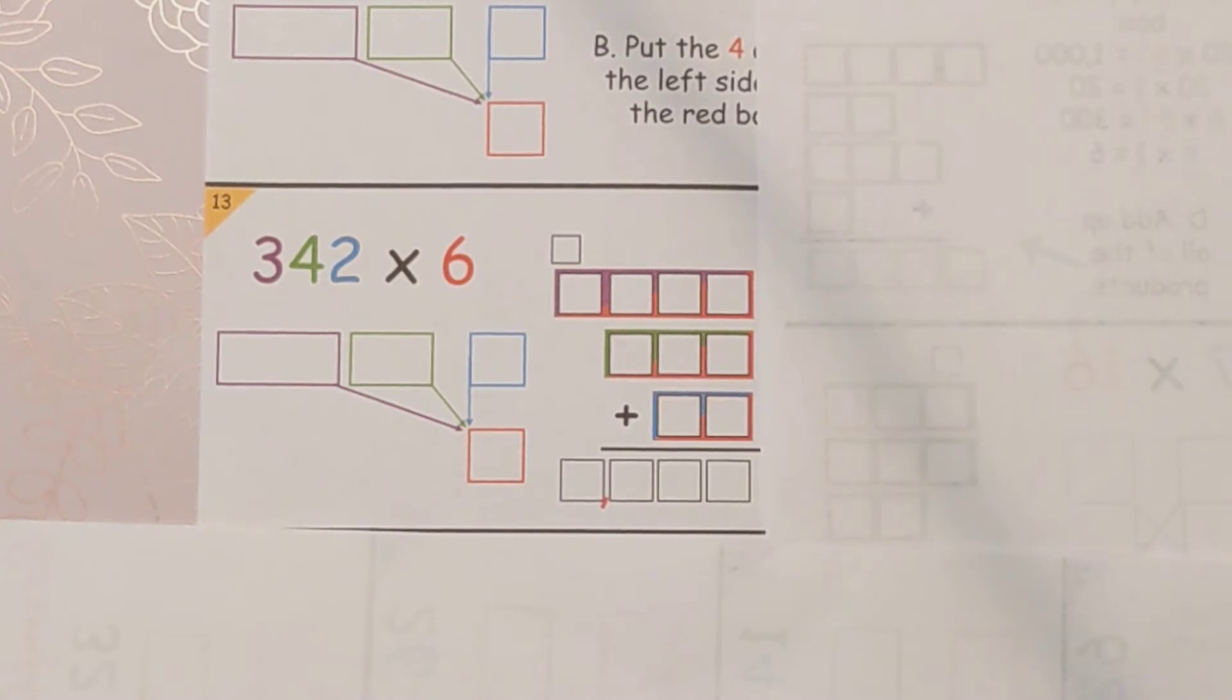The first step, and you can use the color coding to help you, is to take 342 and put it into these three boxes in expanded form.